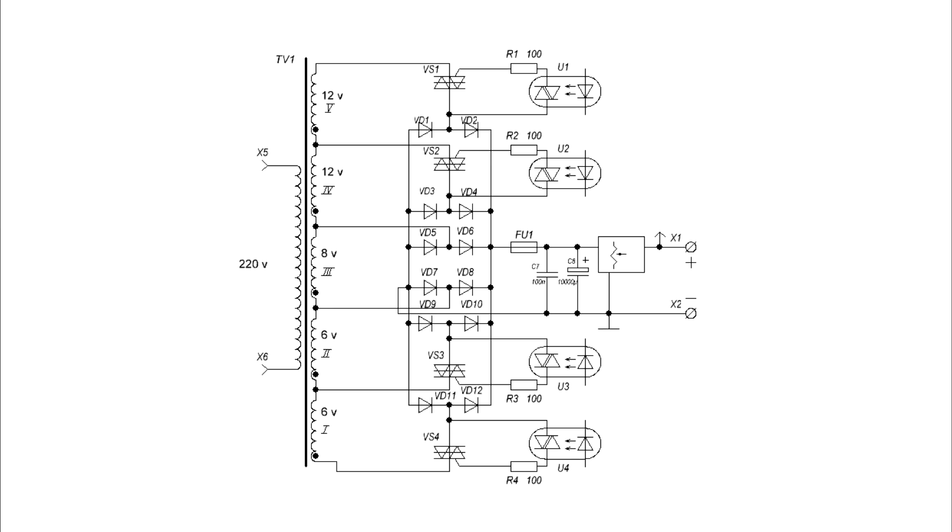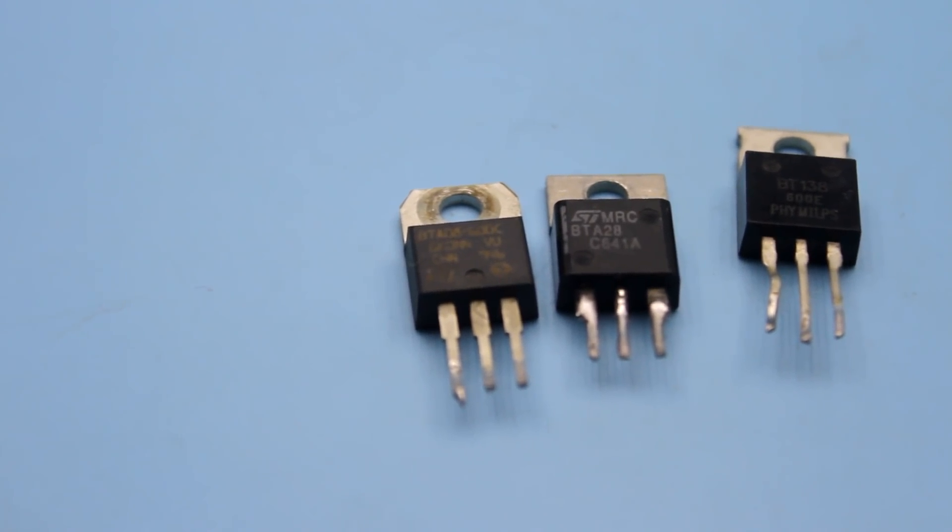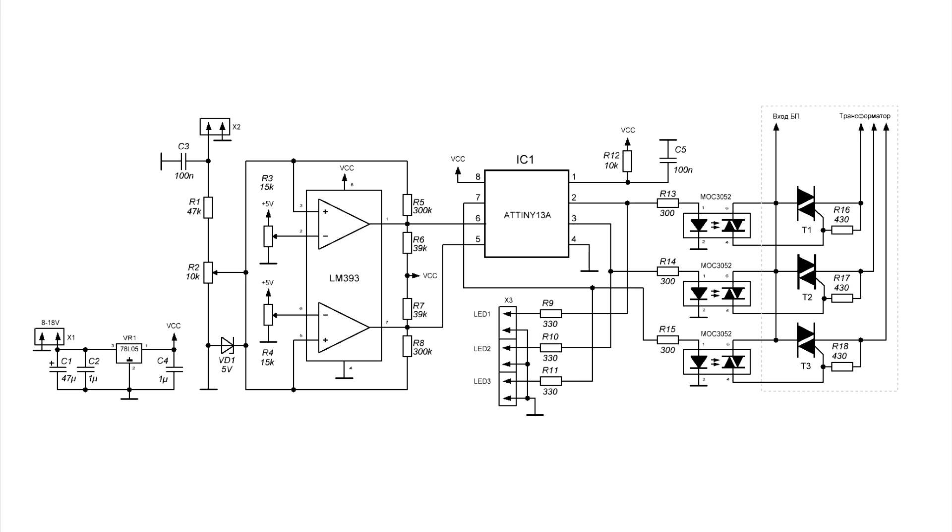There are systems where the switch is a triac, but such switches are also not ideal. There are control problems, and the triac itself will have losses and therefore heating. In addition, triac circuits are rather complicated.